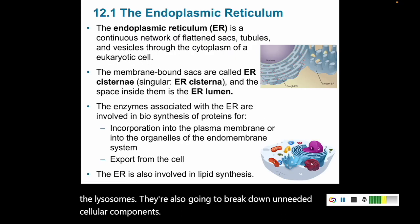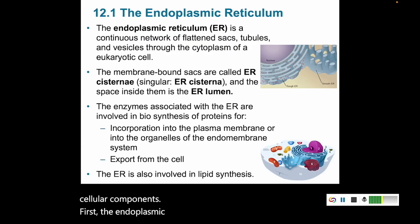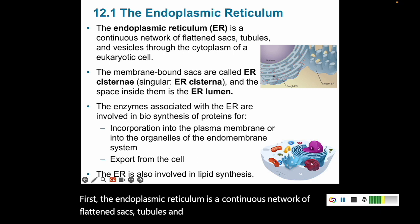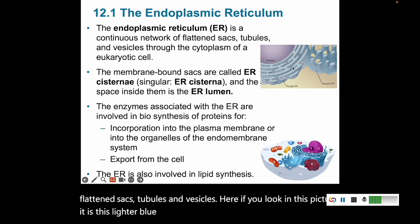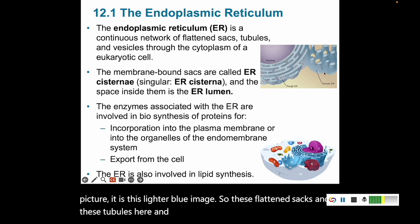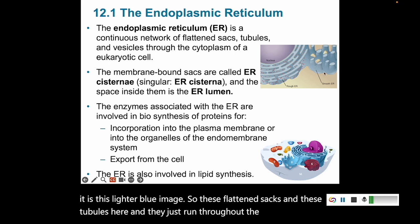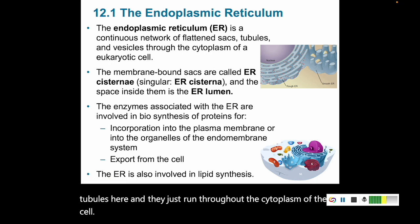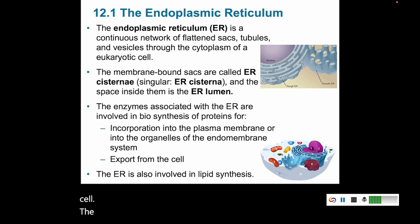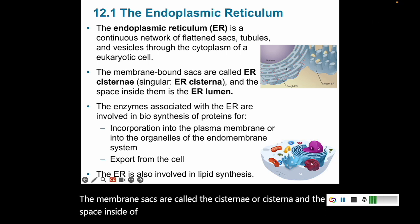The endoplasmic reticulum is a continuous network of flattened sacs, tubules, and vesicles. Here, if you look in this picture, it is this lighter blue image — these flattened sacs and tubules that run throughout the cytoplasm of the cell. The membrane sacs are called the ER cisternae, or cisterna, and the space inside of them is called the lumen.